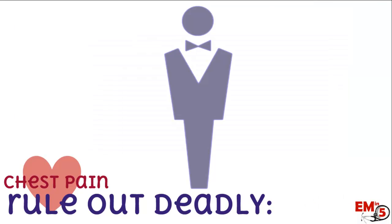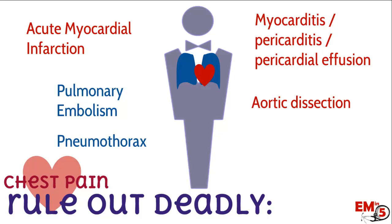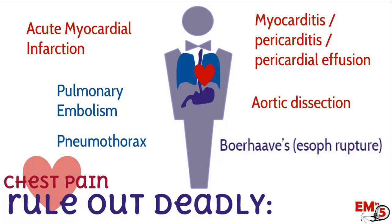When thinking about patients with chest pain, I like to think about ruling out my six deadly diagnoses. From the cardiac system: acute myocardial infarction, myocarditis, pericarditis, and pericardial effusion, and also aortic dissection. In the lungs: pulmonary embolism and pneumothorax. And in the GI tract: Boerhaave's, or esophageal rupture. These are the deadly six you should think about and try to rule out on every patient.